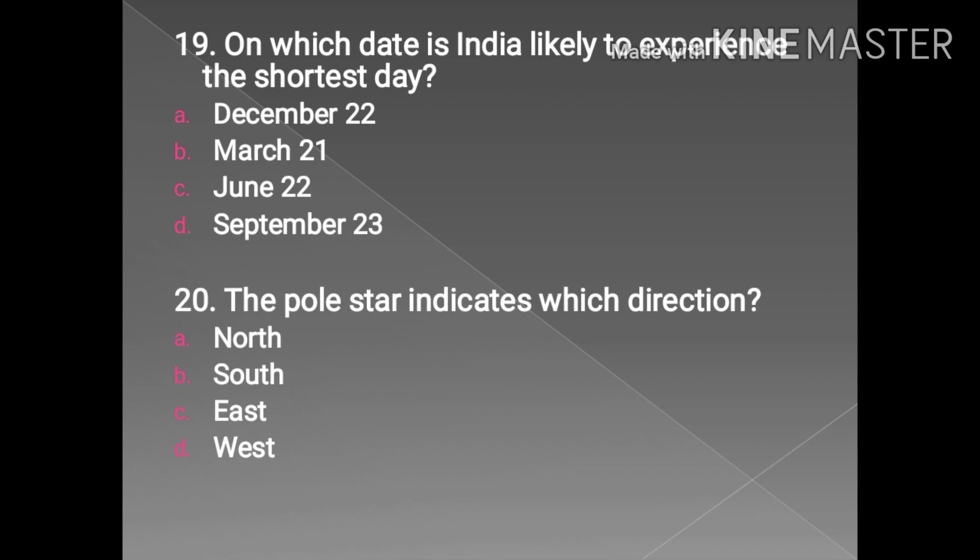Question number 19: on which date is India likely to experience the shortest day? December 22 is the right answer. It is also known as winter solstice. The winter solstice occurs at the moment when the North Pole is tilted furthest away from the Sun.